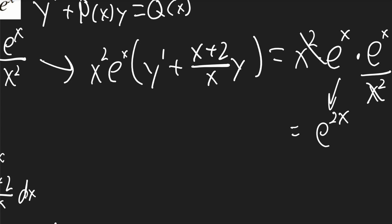I'll now distribute on the left. It'll be x squared e to the x times y prime plus x squared e to the x times x plus 2 over x. I could simplify that, but I don't need to.